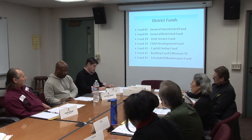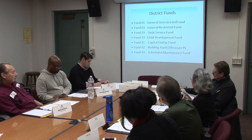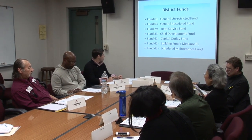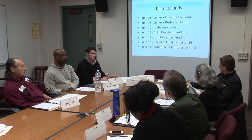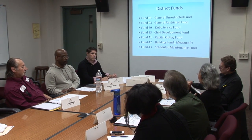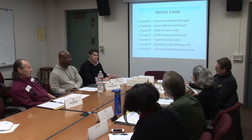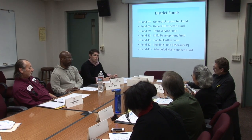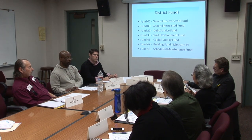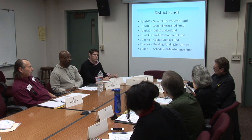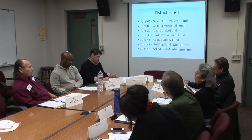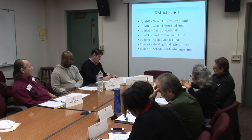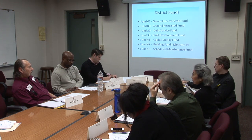Fund 42 is the building fund — this is Measure P, the $150 million bond measure that was passed, being used to build the arts building right now, and we had the campus center as part of this project. Fund 43 is the scheduled maintenance fund. Prior to 2008-2009, the state was giving us money for maintenance of certain parts of the campus, and that also stopped. We're not getting any scheduled maintenance from the state, so we need to fund it from Fund 1. The burden is shifting from the state to the district.